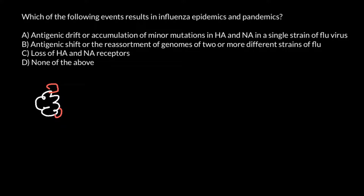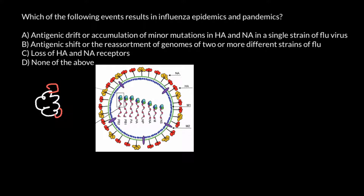Looking at this picture, you can see the structure of the influenza virus. What is interesting is that while most viruses have genomes that are either single-stranded or double-stranded, circular or linear, the influenza virus genome is fragmented. We see here eight fragments, where each fragment codes for one protein, and two fragments code for two proteins each — so eight fragments code for ten proteins total.